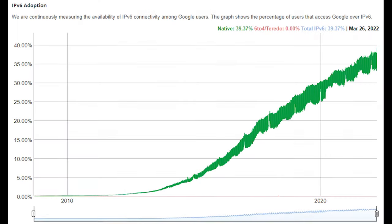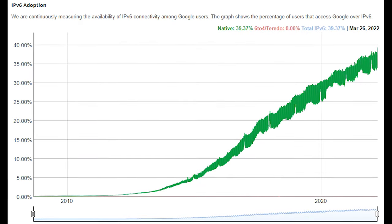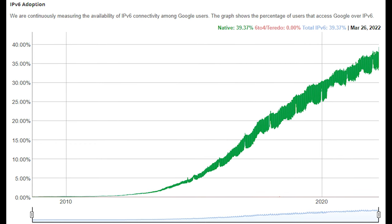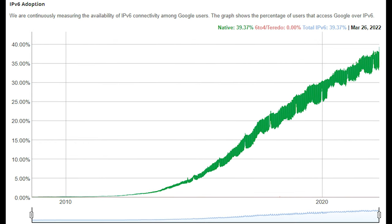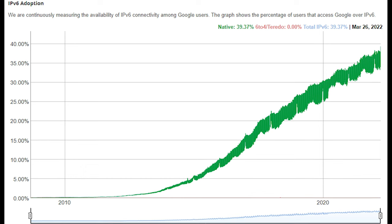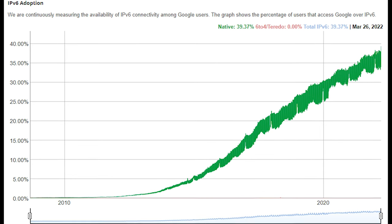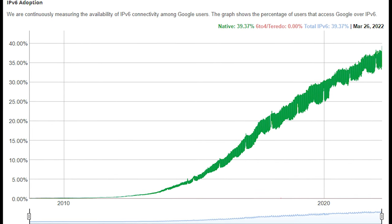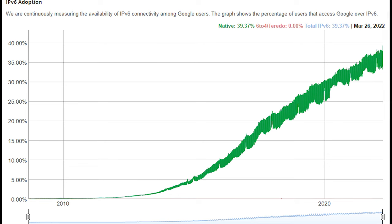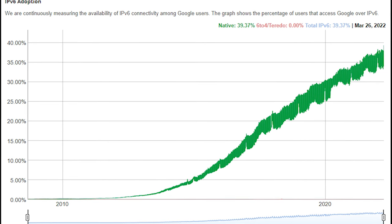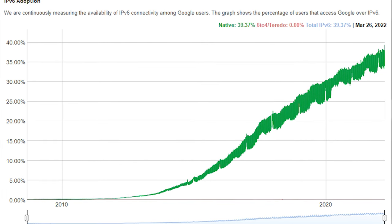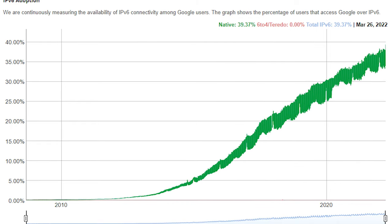Even though IPv6 adoption has been slow in the past, it is gaining momentum. This is a graph of the IPv6 devices that connect to Google services — it really speaks for itself. More and more people are using IPv6. So love it or hate it, as network engineers, we need to know how it works and how to support it.